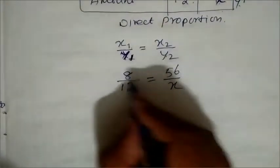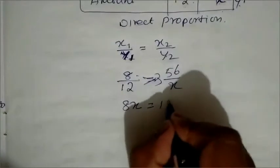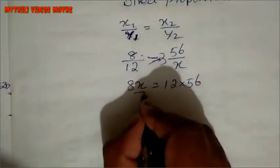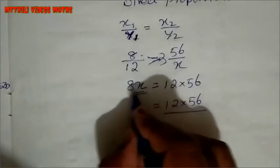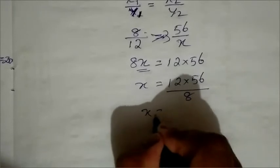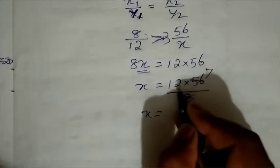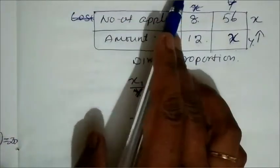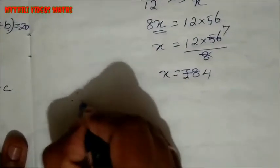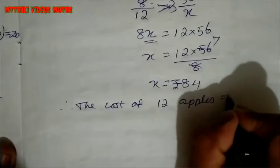Now just cross multiply. 8 into x equals 12 into 56. So 8x = 672. Therefore x is equal to Rs.84. Cost of 12 apples equals Rs.84.